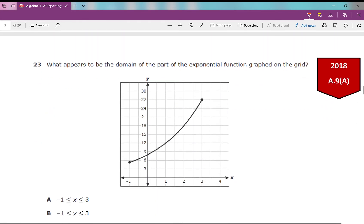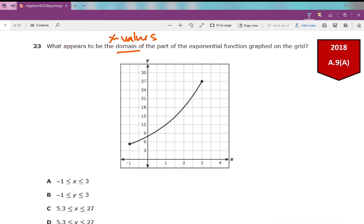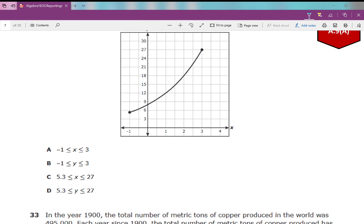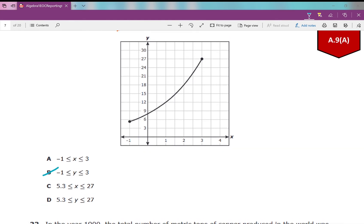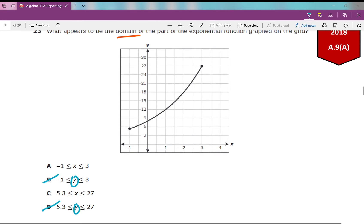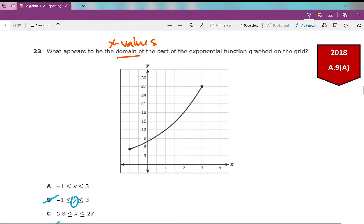Number 23. What appears to be the domain, the x values, of the part of the exponential function graphed on the grid? What's the domain? We're looking at our x values. Can we eliminate any answer choices? Sure. We can eliminate B and we can eliminate D because these have y in there. You need to make sure you know your academic vocabulary. Domain is your set of x values. How far left to how far right is my function going?